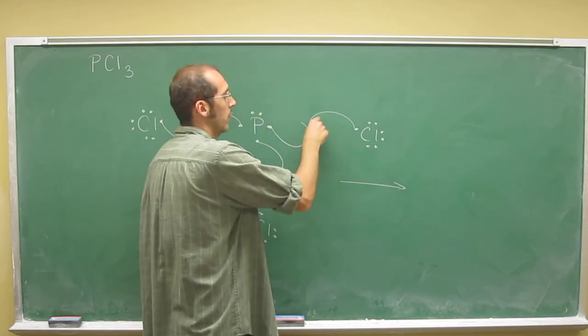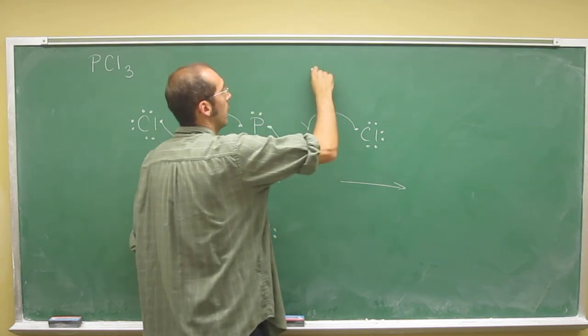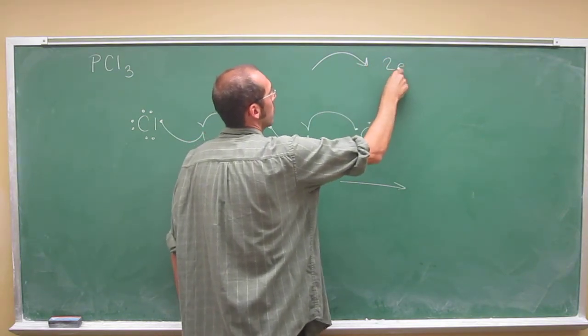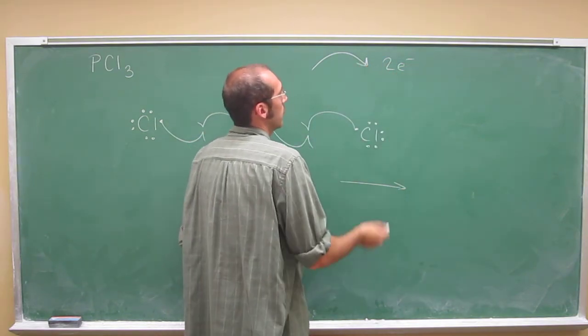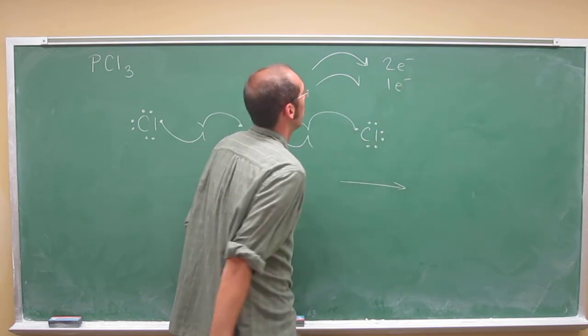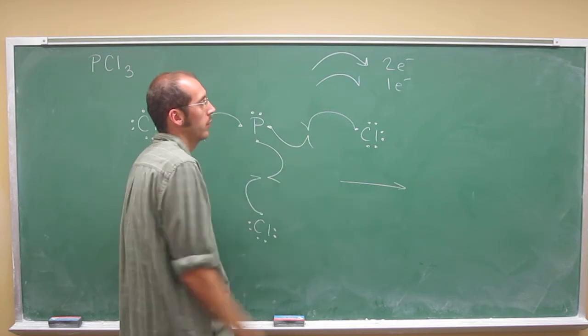This time I'm not going to write the one electron, because it's not conventional to do. So let's draw what happened here. So remember fish hook arrows, only one head of the arrow. Why? Because like what we said before, double headed arrows mean two electrons. Single headed arrows mean one electron moved. One electron moved. One electron moved.